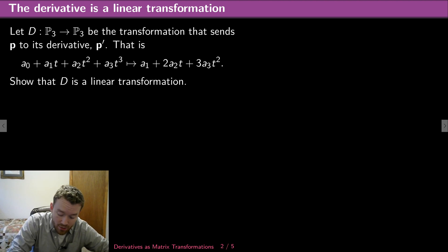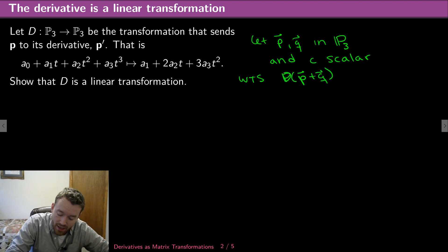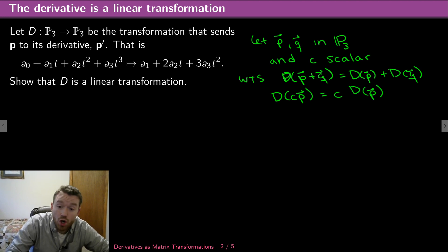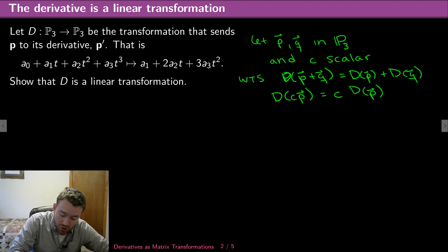For this transformation, I'll let P and Q just be polynomials in P3, and C just be a real scalar. I want to show that D of P plus Q equals D of P plus D of Q, and also that D of C times P equals C times D of P. So I want to show that this thing splits over sums and that I can factor out scalars like C. This proof is just going to use calculus.